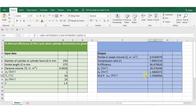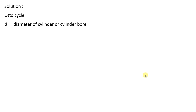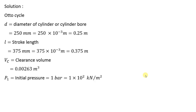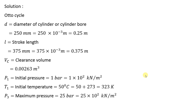Let us start with the solution part. It is an Otto cycle. Diameter is given as 250 mm, converted to meters: 0.25 m. Stroke length is 375 mm or 0.375 m. Clearance volume is 0.00263 cubic meters. Initial pressure is 1 bar. Converting to kilo Pascals: multiply bar by 10 squared, so P1 = 100 kPa. Temperature is converted to absolute value: 50 + 273 = 323 K. Maximum pressure is 25 bar or 2500 kN/m².